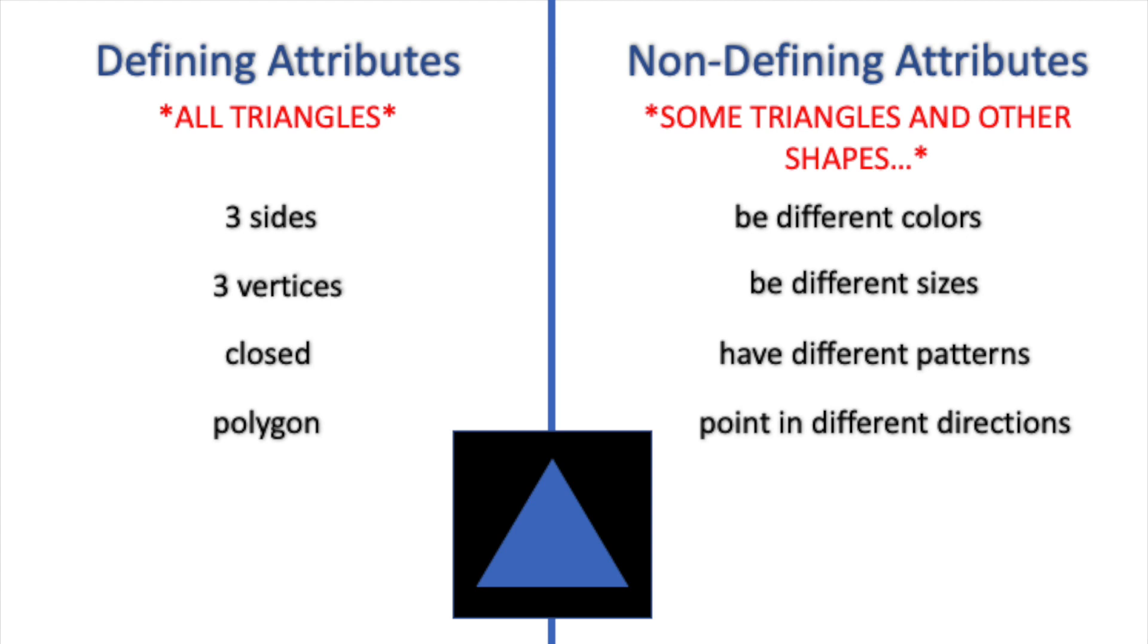That's because these are non-defining attributes, and they could be true for other shapes. But could I have a pentagon that has three sides and three vertices? Of course not, because then it would be a triangle. Three sides and three vertices are defining attributes of a triangle.